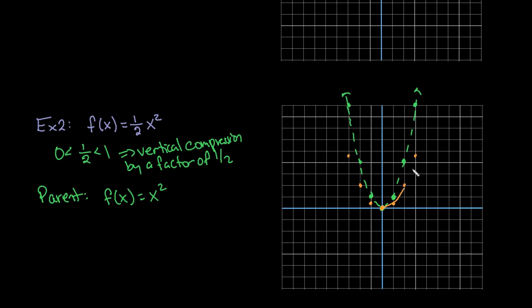So we can see that our parent function isn't going up as quickly. It's going to be a little bit wider. It's pushing it down. So if you think about it as a force, if I were pushing something down, that's what compress means to do, then it's going to make it a little bit wider.